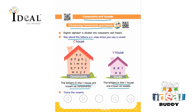The child has to trace the vowels: A, E, I, O, U. They will have to trace the vowels here — first they will trace A, then E, then I, then O, and U.